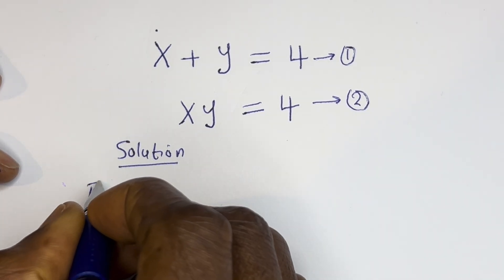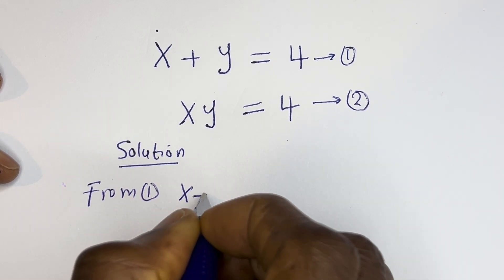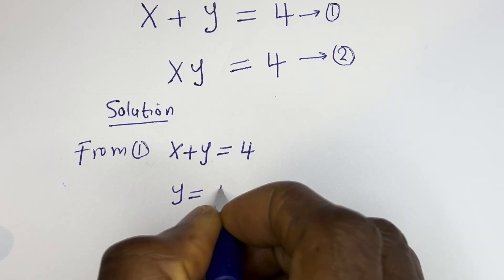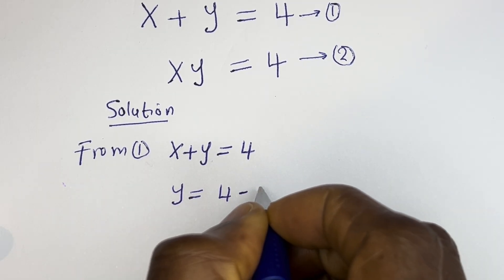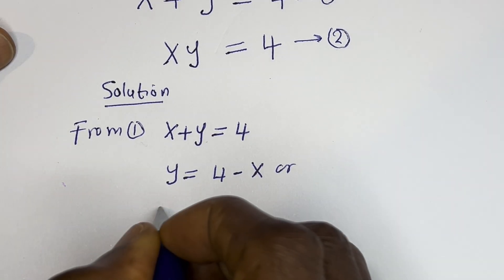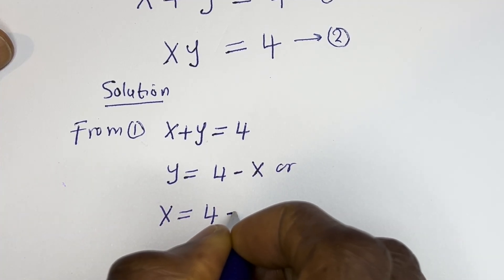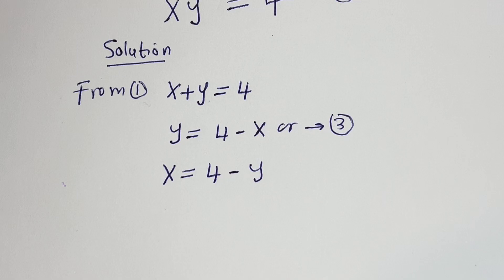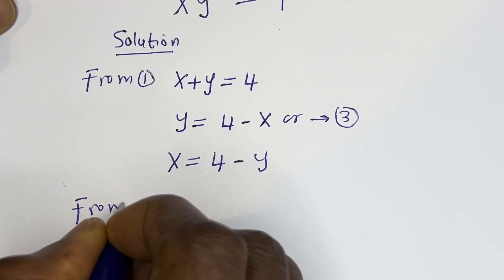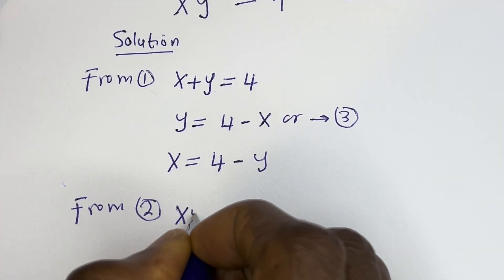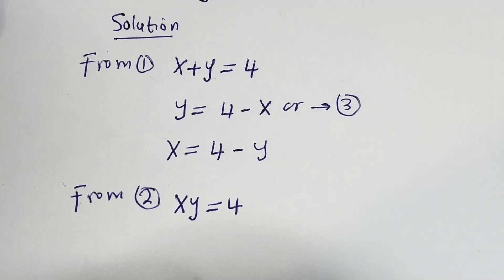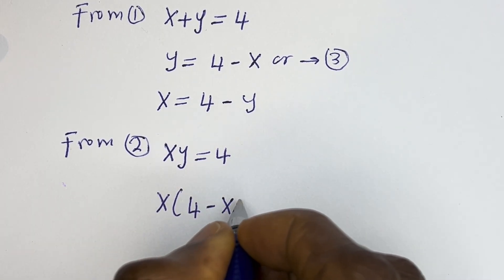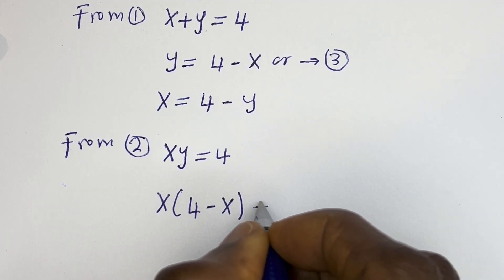From equation 1, x plus y is equal to 4, so y is equal to 4 minus x, or x is equal to 4 minus y — let's call this equation 3. Then from equation 2, xy is equal to 4. We substitute: x multiplied by (4 minus x) is equal to 4.